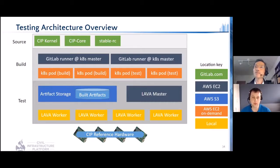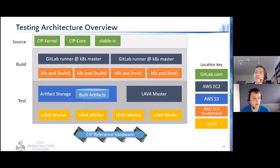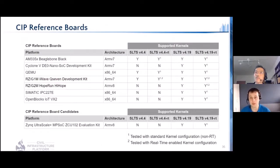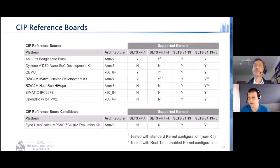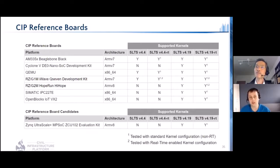At the moment, we're testing all CIP kernels. Every push gets built in about 30 to 34 different configurations provided by project members, then downloaded and tested on boards where appropriate. CIP has a number of reference platforms — platforms we support in our kernels and test on. Most are supported on the 4.19 kernel, our latest, and some also on the older 4.4 kernel. They cover a range of architectures: ARMv7, ARMv8, and x86. Some boards are also tested using real-time configurations with our real-time kernels.